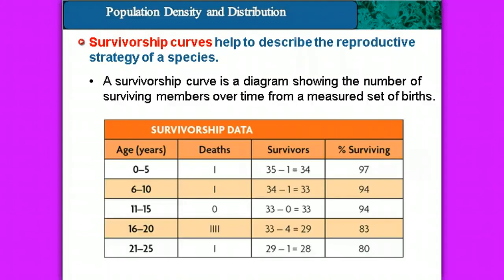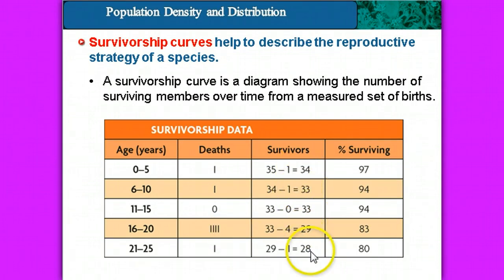What we try and do then is describe the reproductive strategy of a species. We look at what's called the survivorship curve of that species. This is a diagram showing the number of surviving members over time for a measured set of births. We can see ranges of age along with the number of deaths that occur during that age period, which shows us the number of survivors for each time period, and then we can calculate the percent that actually survive in that age range.